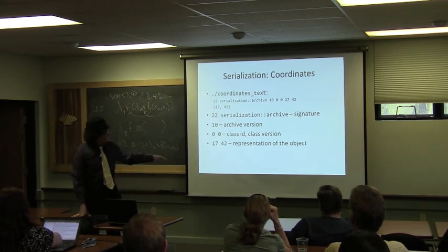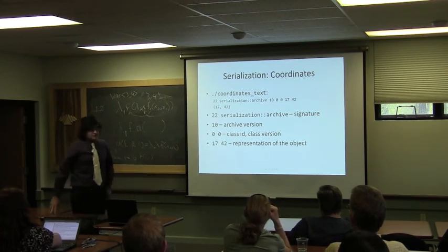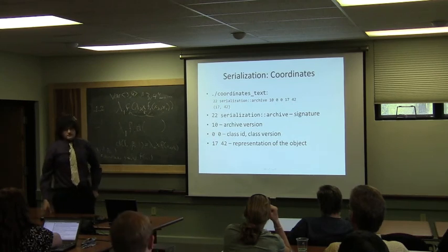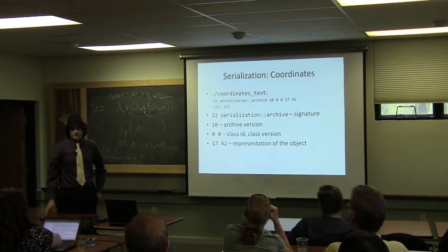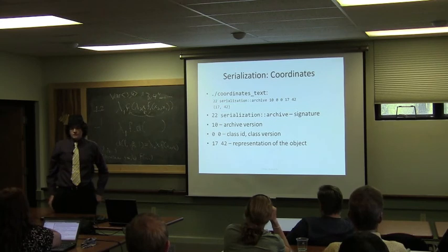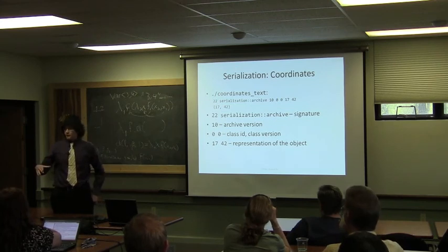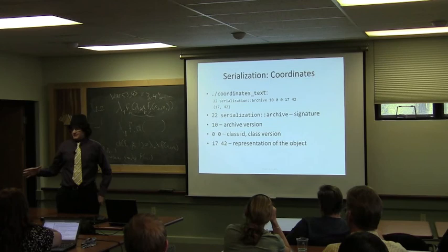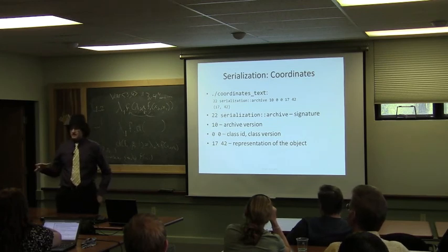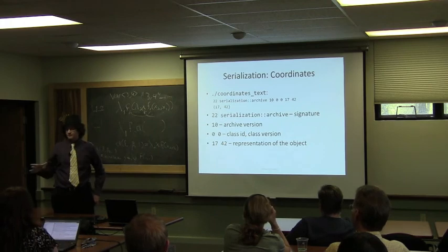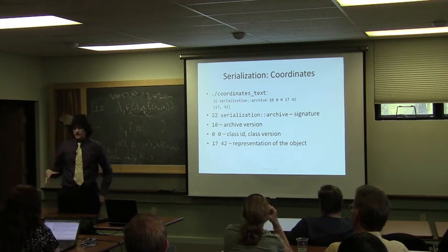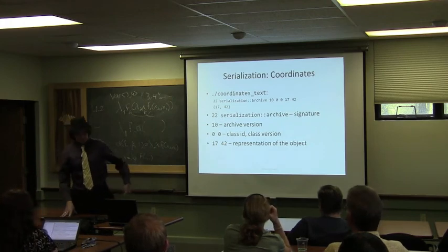This is the output of that program using the text archives. The first part is the archive signature — so when written to files it isn't mistaken for other binary data. Then we have the archive version, the class ID and class version, and the actual object representation. One downside of serialization is that it's not the most compact format for sending data over the network, as it's really designed for long-term persistence of objects across many years and versions.